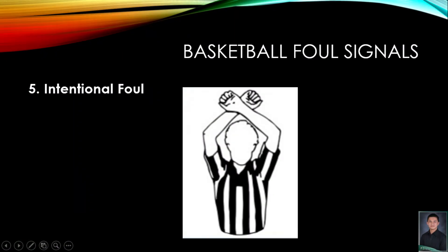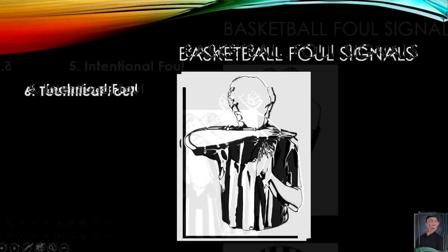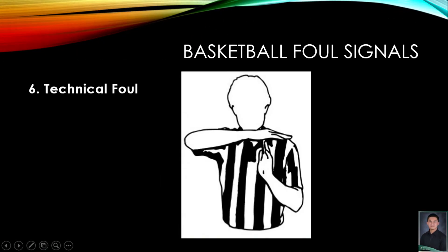Number five is the intentional foul. When a player commits an intentional foul, the official will put both arms above his head and cross them. Number six is the technical foul. To signal a technical foul, the referee will place both of his hands in front of him and put them in the formation of a letter T.